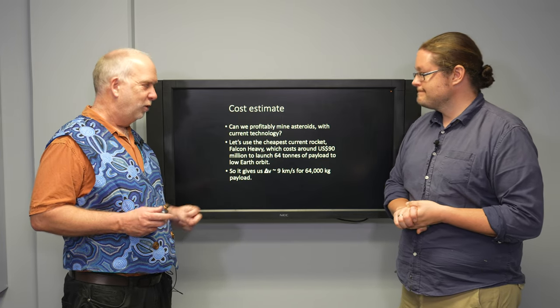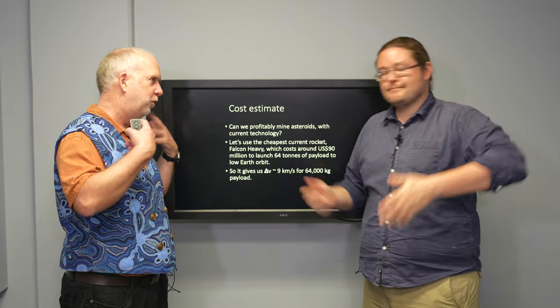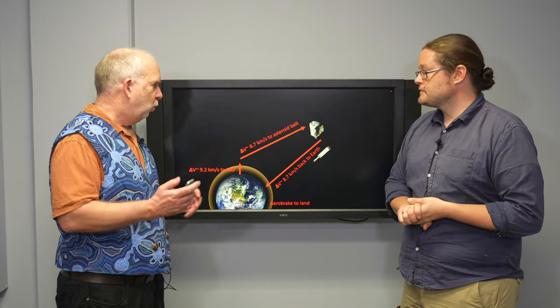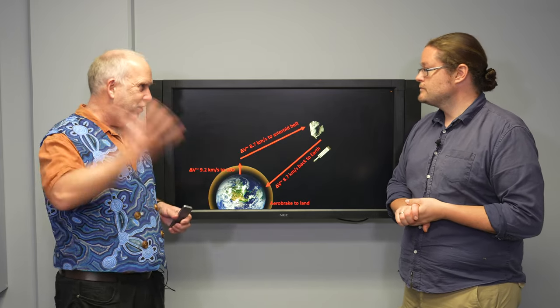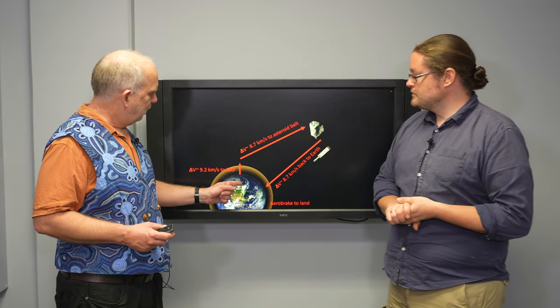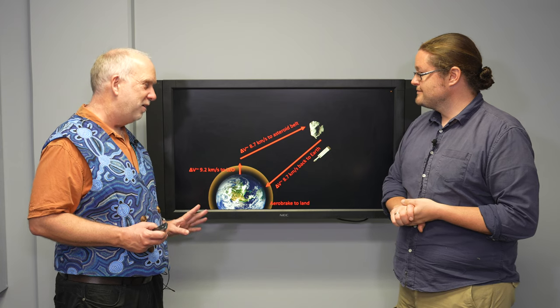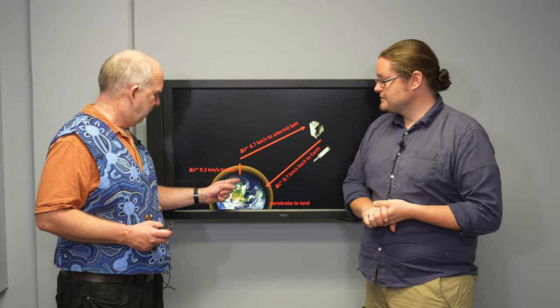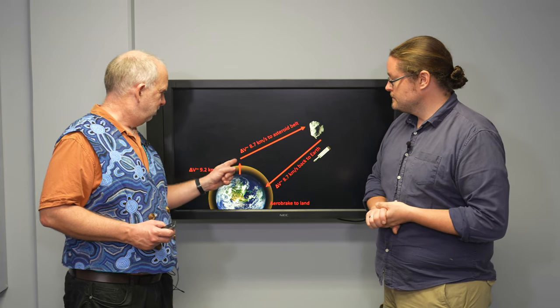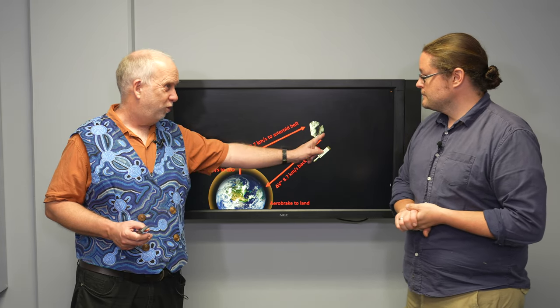So we're going to use something with that power and that delta V. So what delta V do we need? Remember, everything is delta V for professional space people. Conveniently, we need about 9 for everything. So first of all, you need about 9 kilometers per second to get to low Earth orbit.